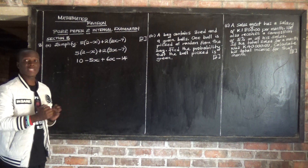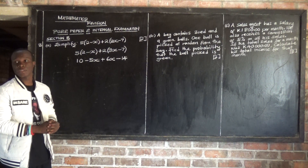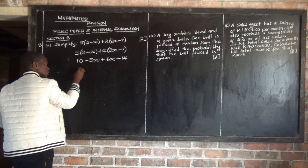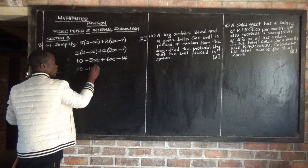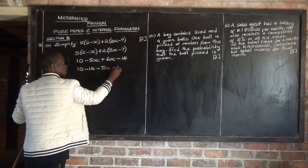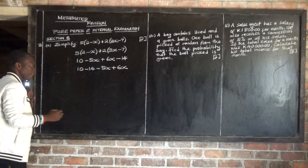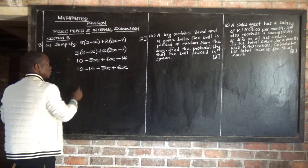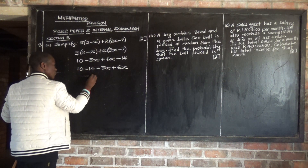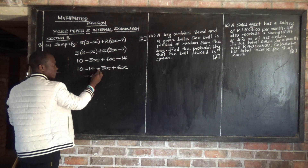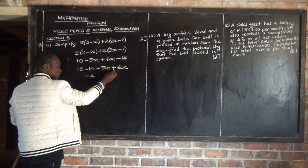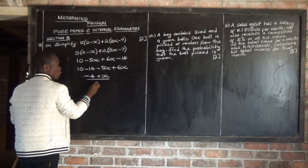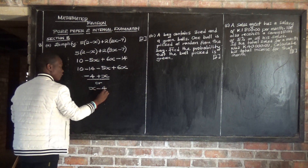The next step is to arrange like terms together — group the like terms. So 10 and negative 14 are like terms; they are just numbers without variables. We say 10 minus 14. Then we have negative 5x plus 6x. What is 10 minus 14? Negative 4. And negative 5x plus 6x gives positive x.